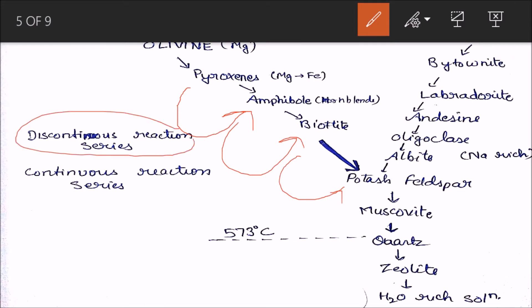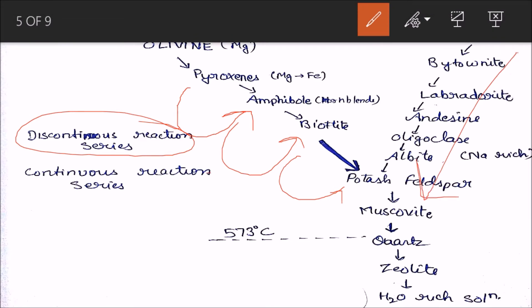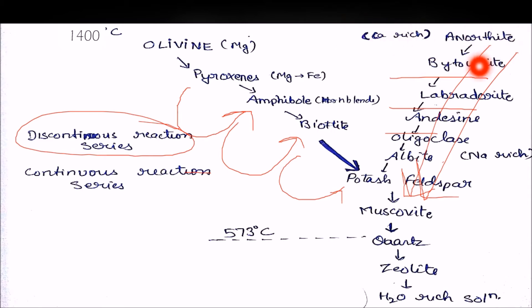The plagioclase feldspar side is called the continuous series because here the structure is the same but just the composition is changing. It starts with anorthite, which is calcium-rich, and goes all the way down to albite. In the region between, there are different compositions — calcium is slowly decreasing and sodium is increasing.